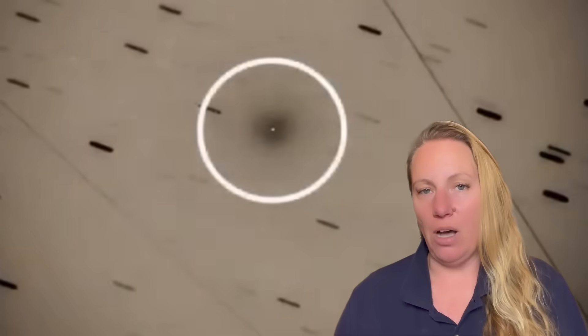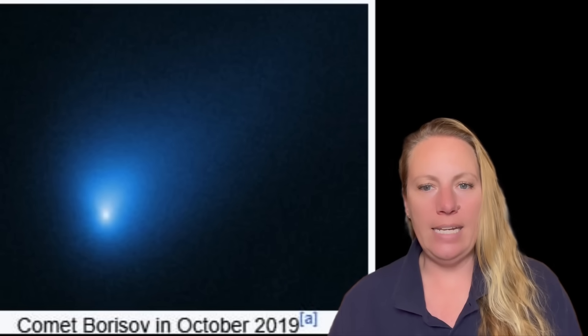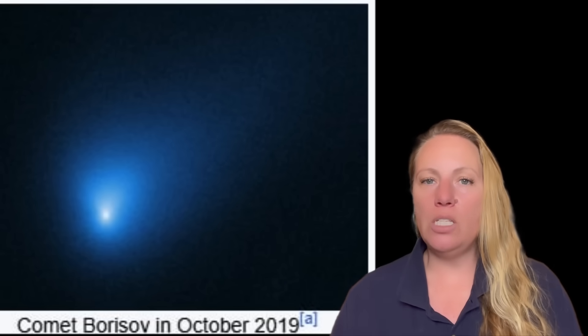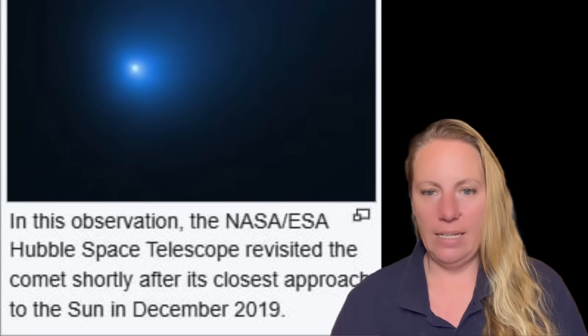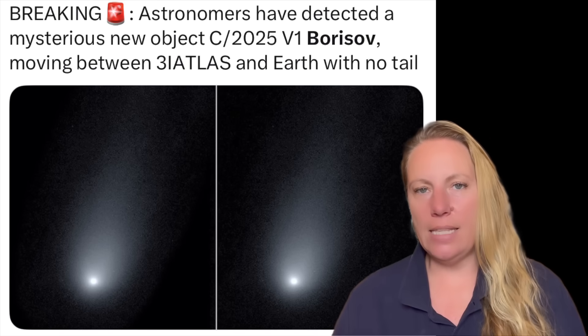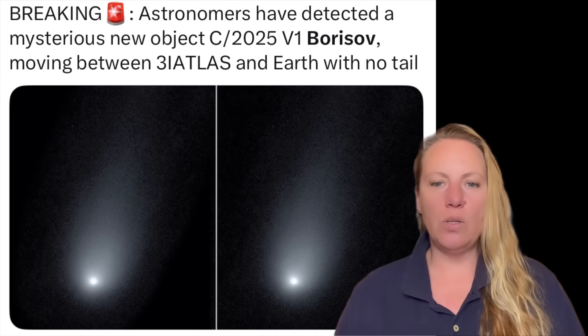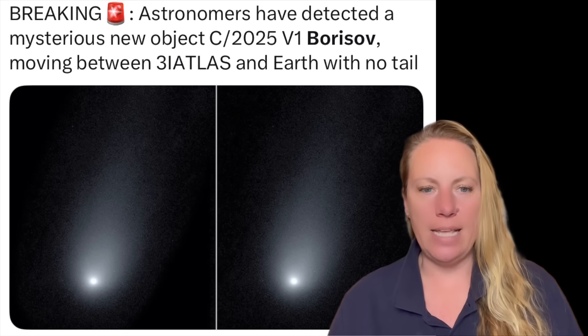So on the morning of November 2nd, astronomer Gennady Borisov, that's where the object has its name from, that has already discovered another comet, 2i/Borisov in 2019, has now found this new object, which is now called C/2025 V1 (Borisov). And you can see it's now cataloged by NASA's JPL, but it's also cataloged by the minor planet center.